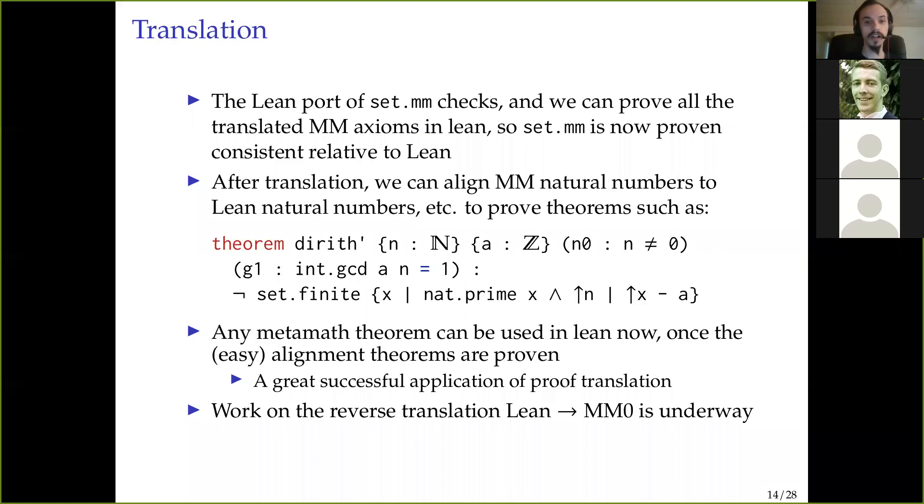So the MM0 formal system is roughly the intersection of MetaMath and second-order logic, which means that it's actually easy to translate between MetaMath and MM0, as well as from MM0 to second-order logic or higher-order logic. So these are the existing translations. So I have a translation from MetaMath to MM0, from MM0 to a bespoke implementation of HOL. And from that, this is sort of an intermediate language, which then translates to Open Theory and also to Lean.